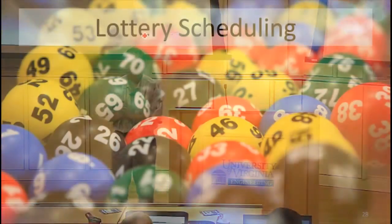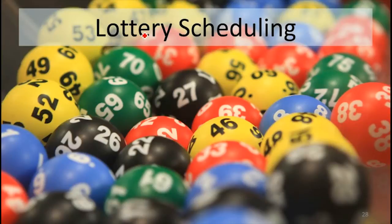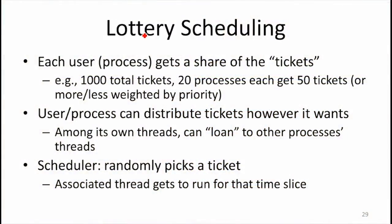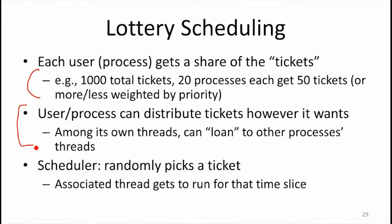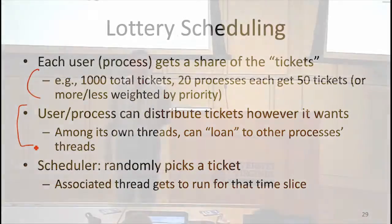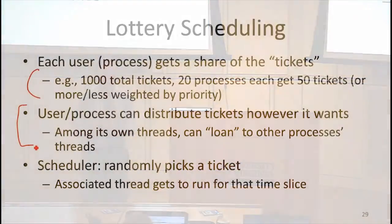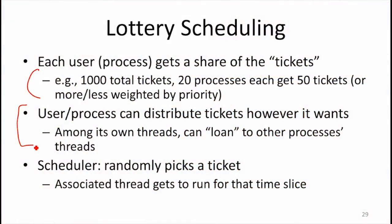One is lottery scheduling. The idea is you allocate tickets to processes, and at each time slice the scheduler randomly picks a ticket and lets that process run. This gives you a way to allocate priority — you can give different processes different numbers of tickets. It makes scheduling very simple. It also gives you a system where processes can distribute their share: a process can give its tickets to another process, so if you want some other process to do work for you, you can allocate tickets to it.